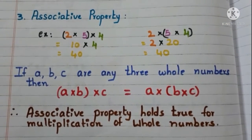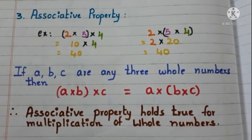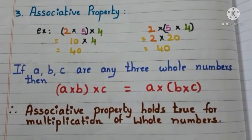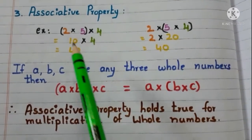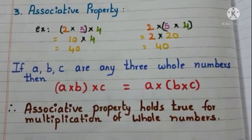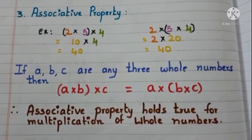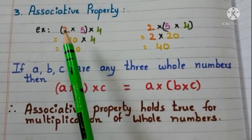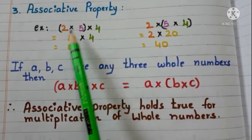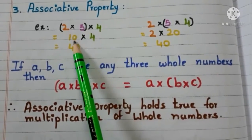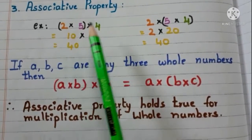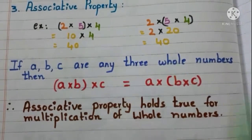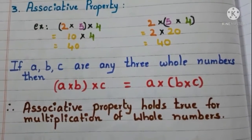Now, associative property. Let us see with the example. Take 3 whole numbers 2, 5 and 4 and find the product. First, multiply 2 and 5. 2 times 5 are 10. Now, multiply with 4. 10 times 4 are 40.